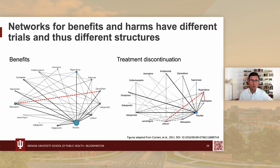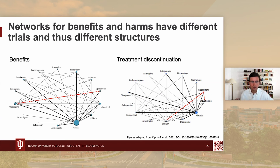When we think about complications for network meta-analysis, one issue is that we get different network structures. In a network meta-analysis by Andrea Cipriani and colleagues, the network for benefits on the left differs from the network for treatment discontinuation used as a proxy for reporting harms. So when network meta-analyses comparing benefits and harms produce different results, we may not know whether those differences arise because of how the networks are connected — there may be methodological problems that need to be sorted out.